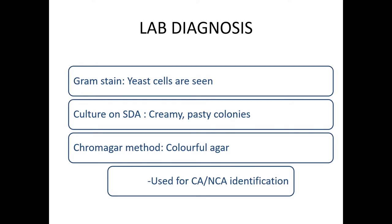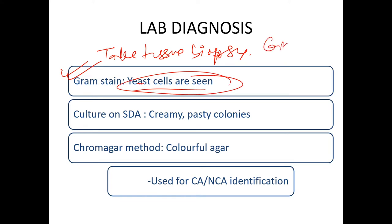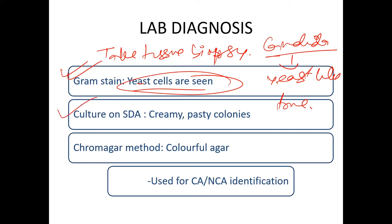Lab diagnosis of Candida is done through tissue biopsy; samples are taken for Gram staining. On Gram stain, yeast cells are seen. Candida is a true yeast-like organism. On Sabouraud Dextrose Agar (SDA), creamy pasty — that is, toothpaste-like — colonies are seen.